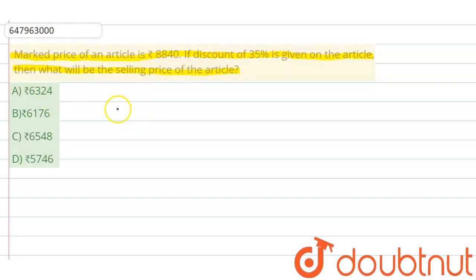यहाँ आपके question में किसी article की MP यानि marked price given है और discount percentage given है. Marked price बराबर है 8,840 रुपए और discount percentage बराबर है 35%.